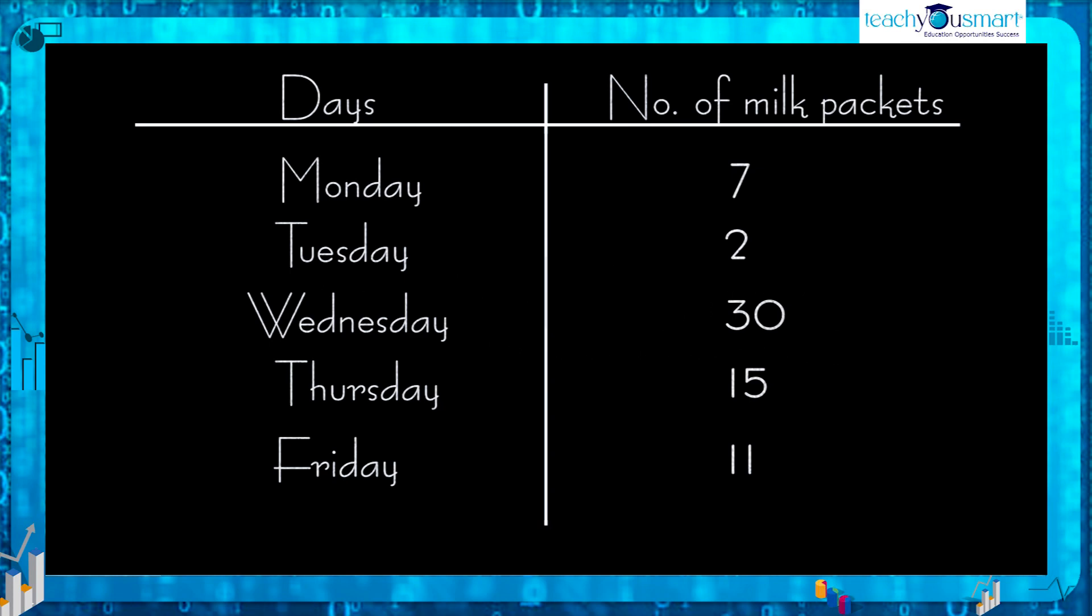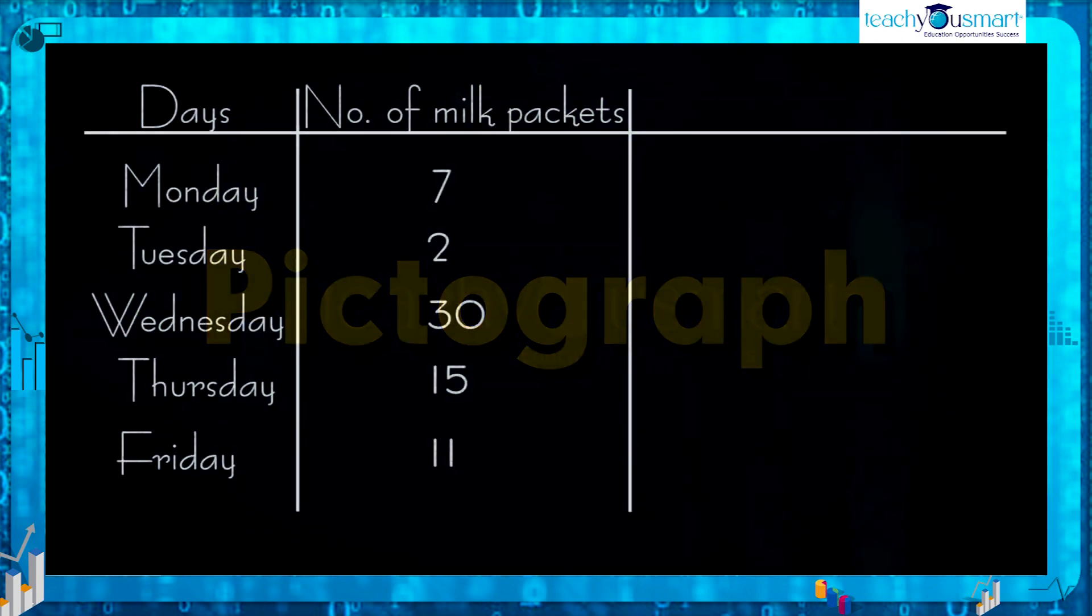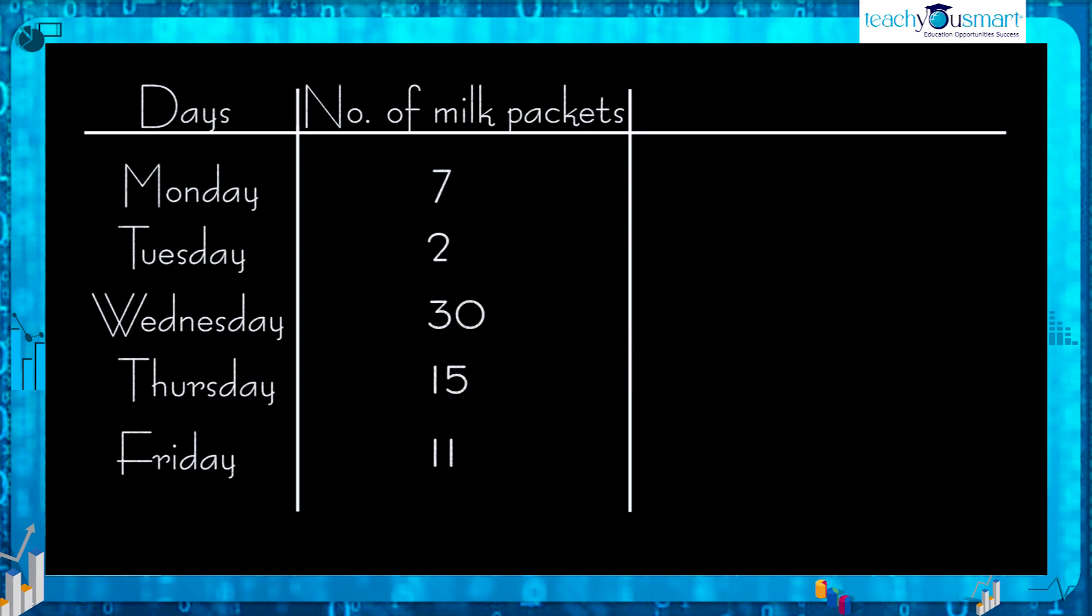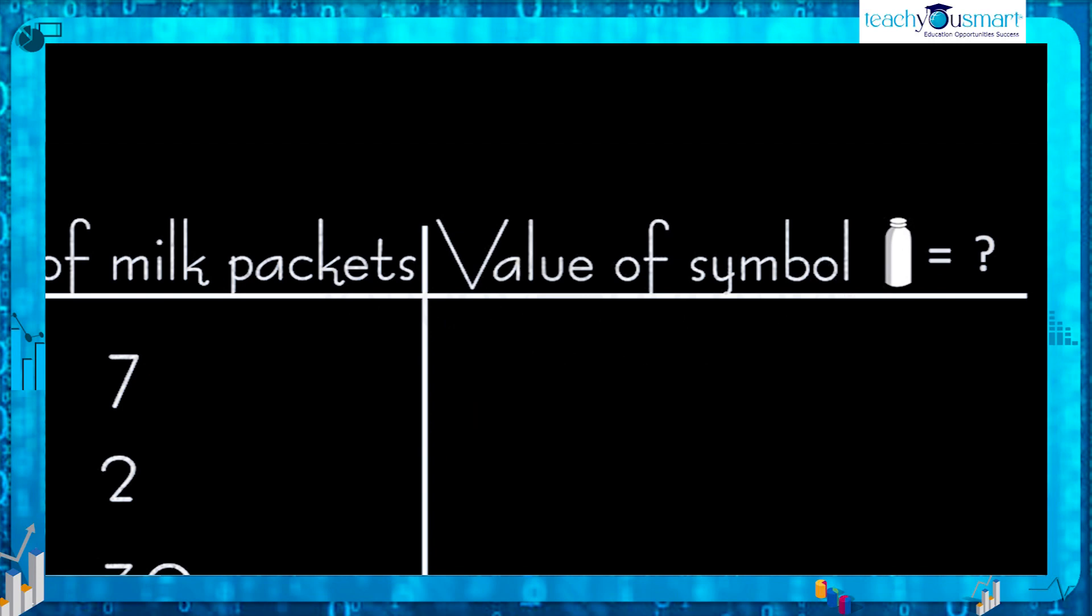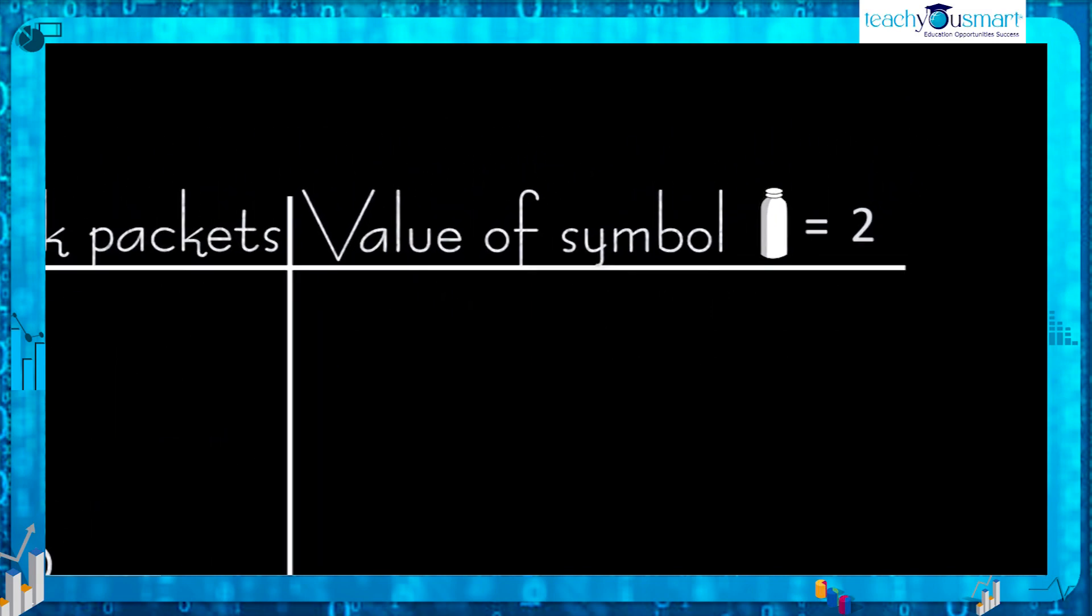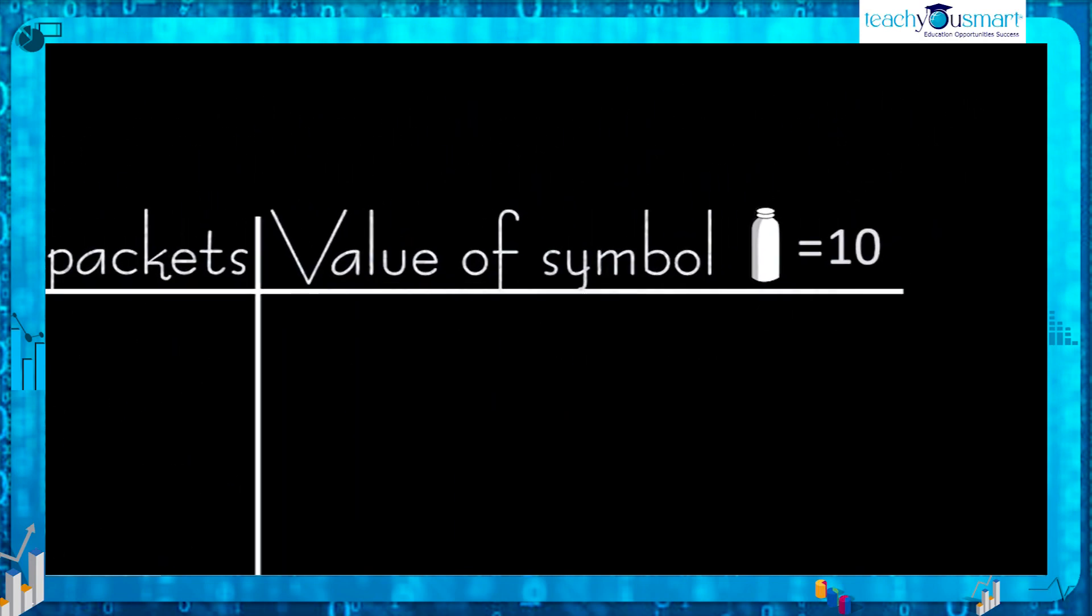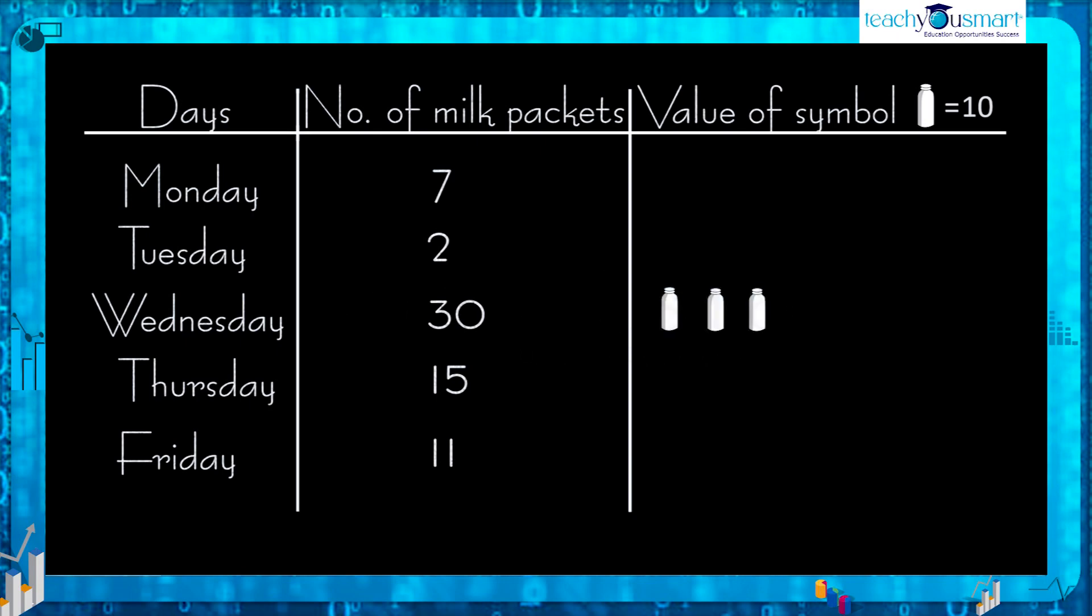In the previous class we learned about pictographs. Can we make a pictograph based on the given data? While drawing the pictograph based on the given situation we must face some difficulties, like what should be the value of the symbol? If the value of the symbol is a small number like 2, it is easy to mark 2 and 7 but difficult to mark 30. If we take the value as a larger number like 10, then we can easily represent 30 but difficult to represent 2 and 7.